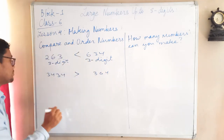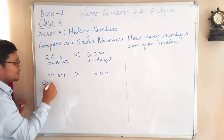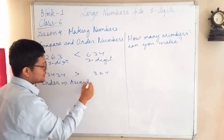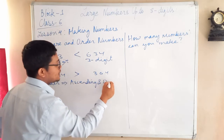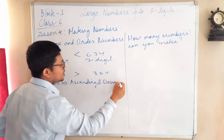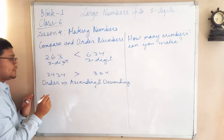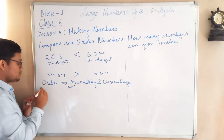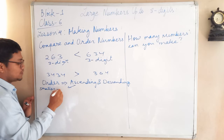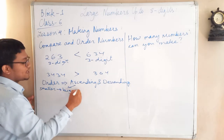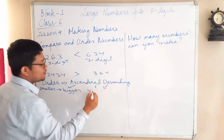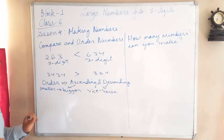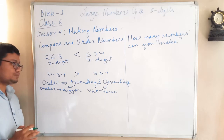Once you know how to compare numbers, you can easily order them. Ordering is of two types: ascending order and descending order. In ascending order you arrange from smaller to bigger, and in descending order it is the reverse — from bigger to smaller.